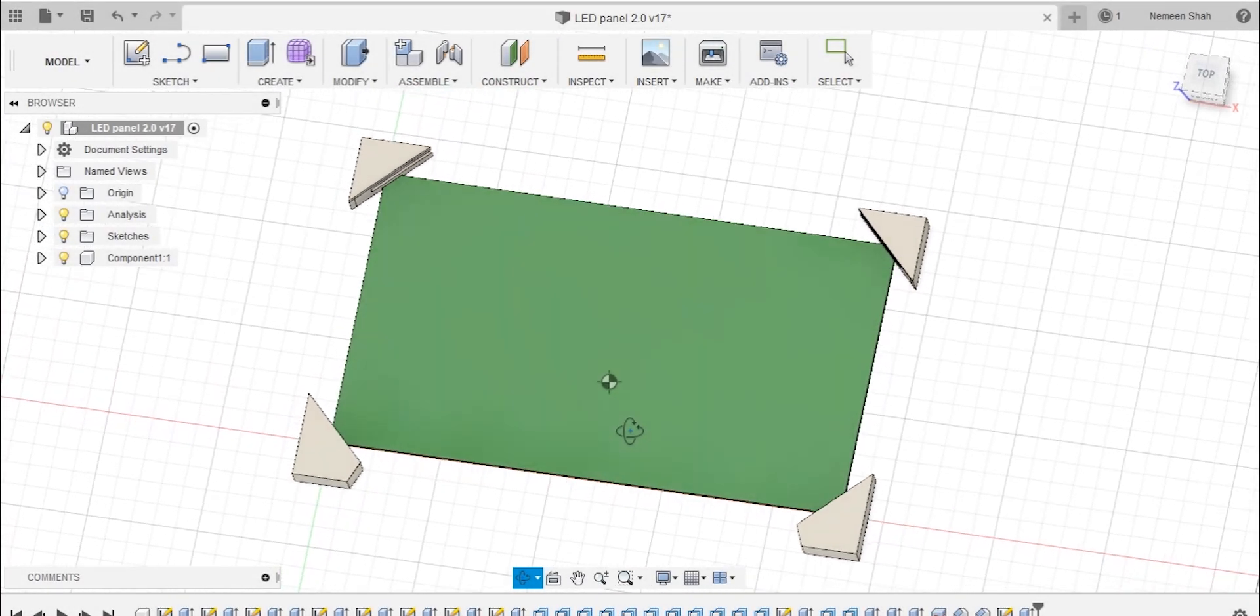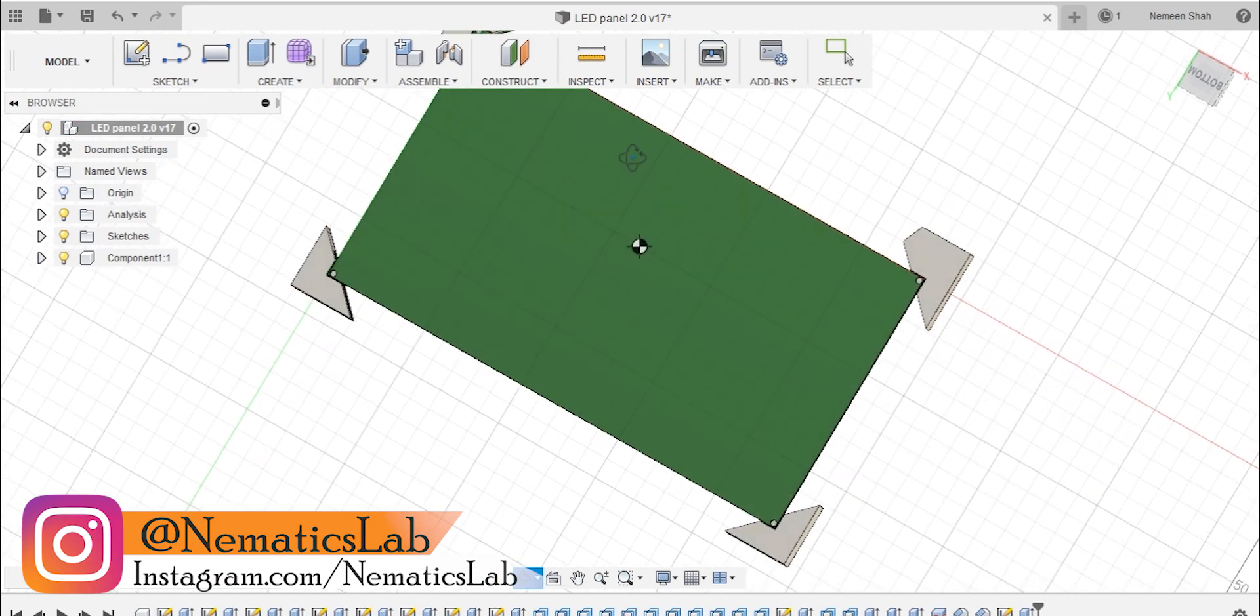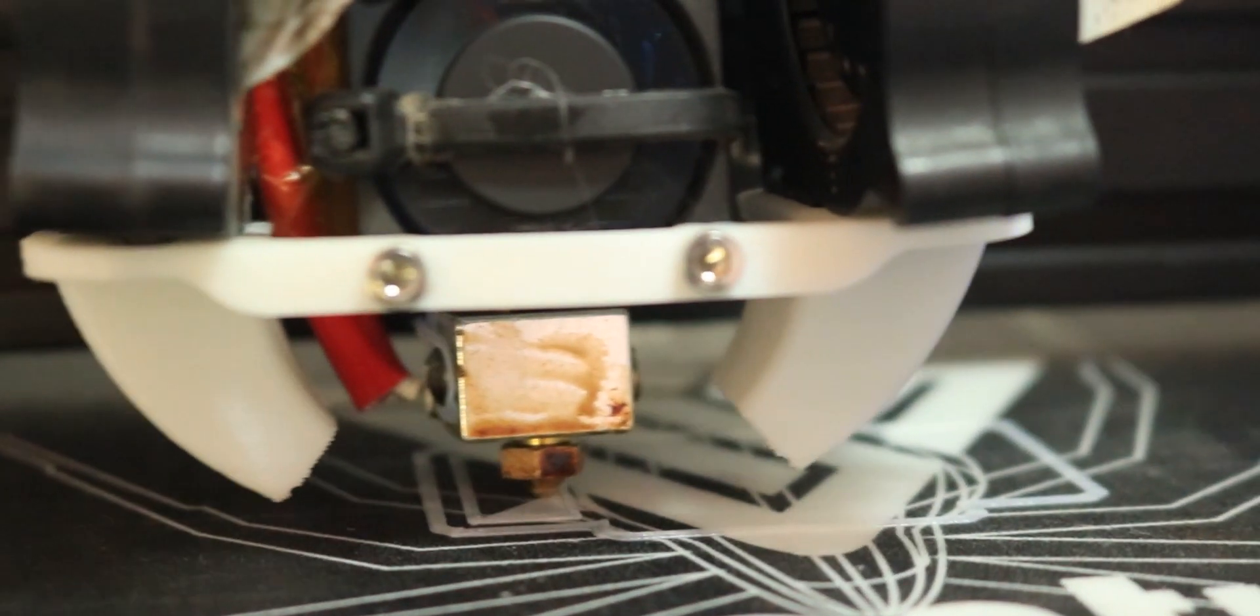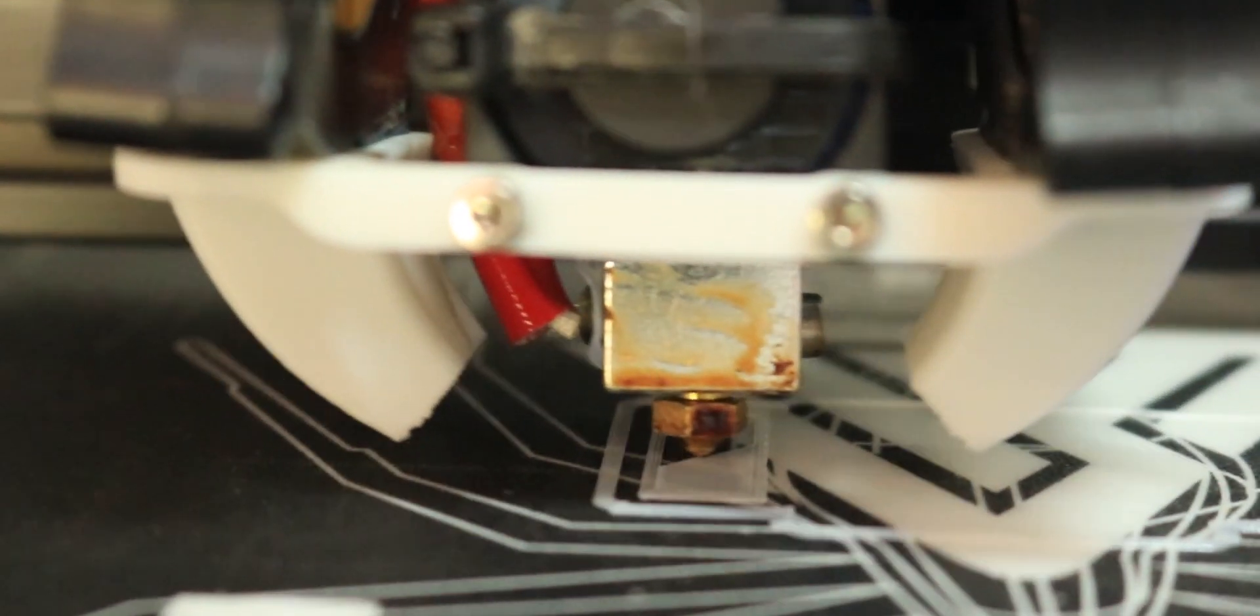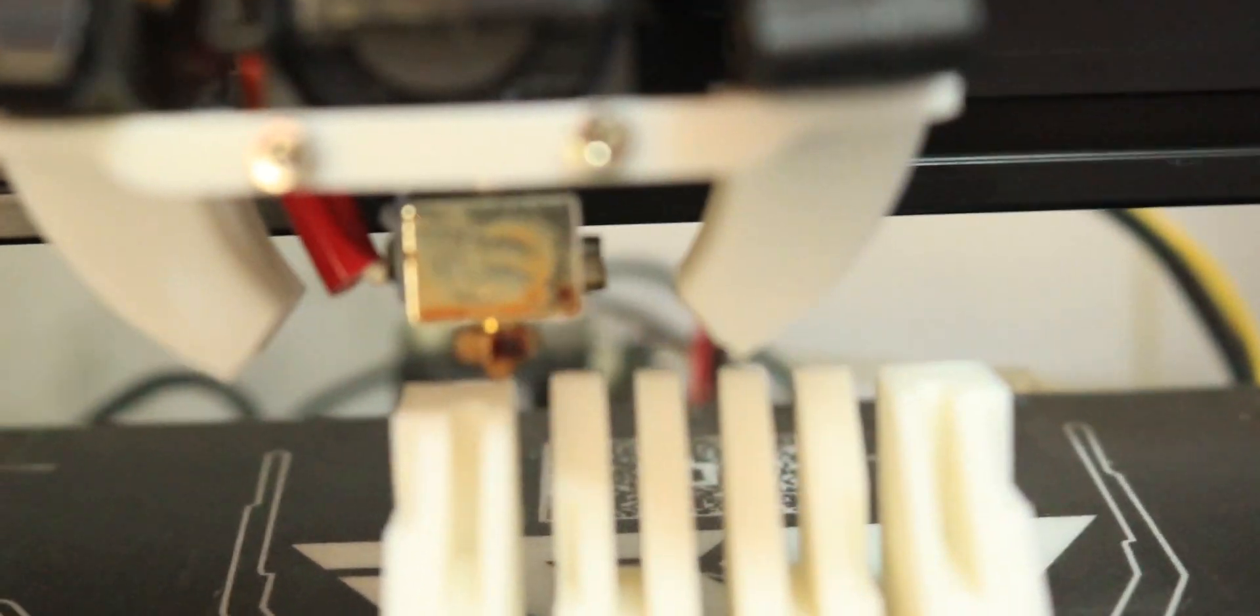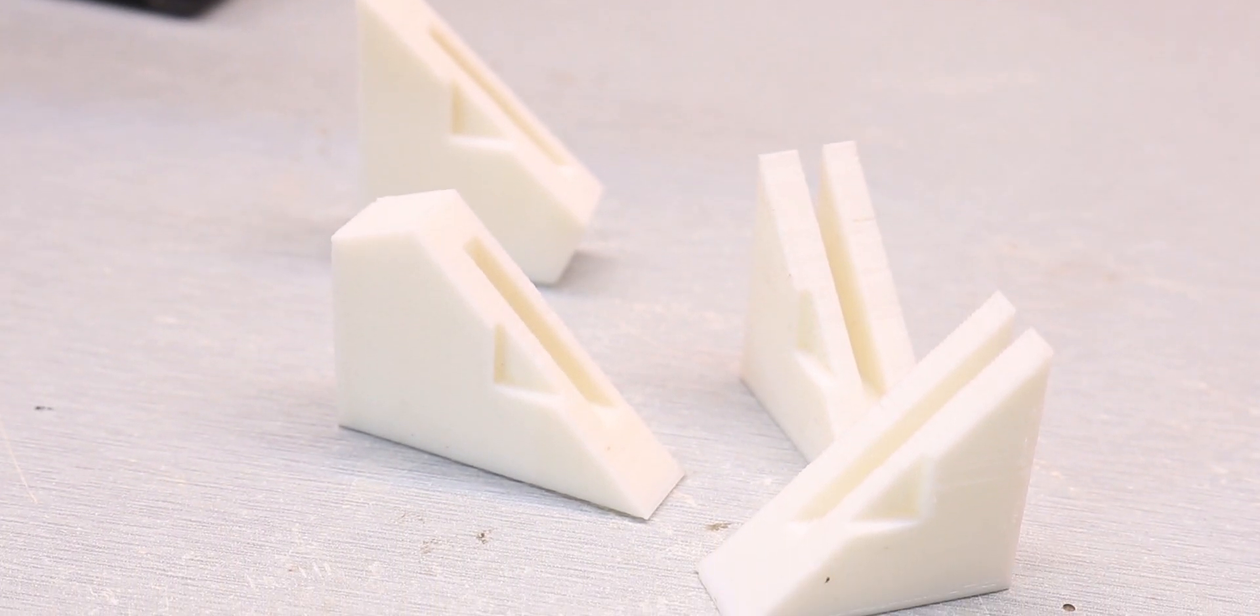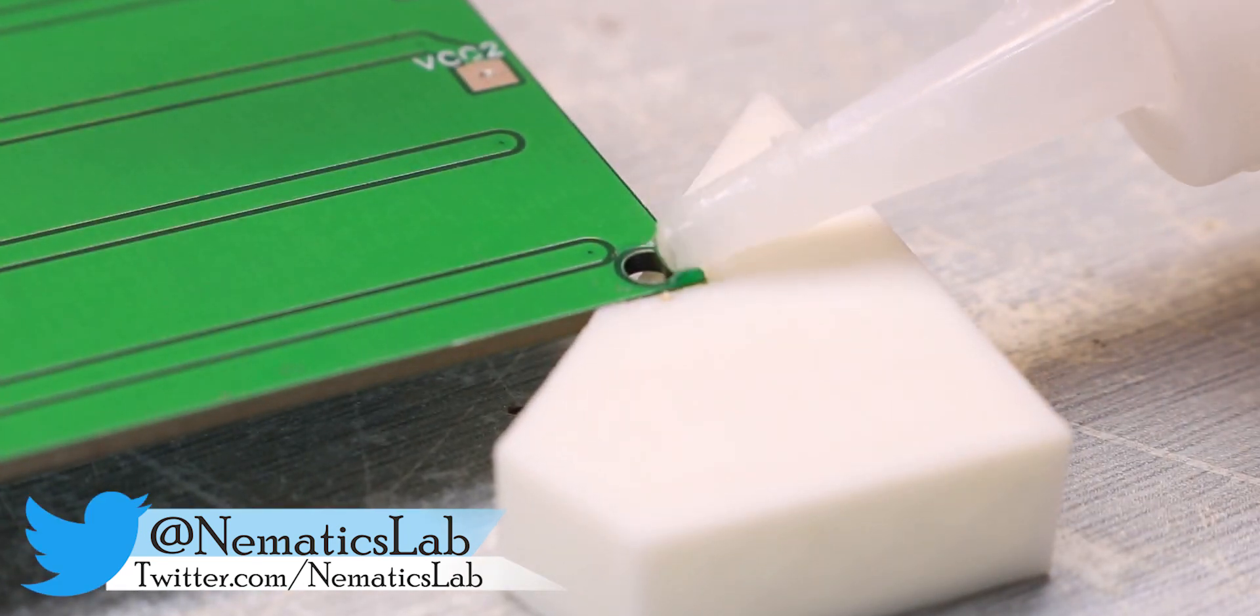Let's start by building a case for the light panel, for which I used Fusion 360 software and designed these four pieces which will hold the PCB. After exporting the STL file I 3D printed them. Later using some super glue I fixed them in position as shown over here.